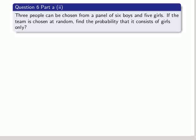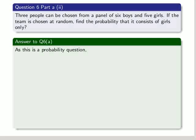3 people can be chosen from a panel of 6 boys and 5 girls. We know that already. If the team is chosen at random, find out the probability that it consists of girls only. Okay, so this is a probability question.